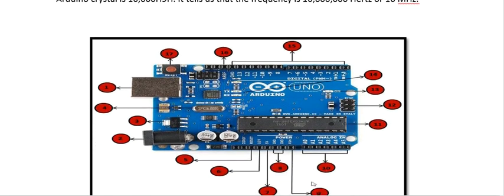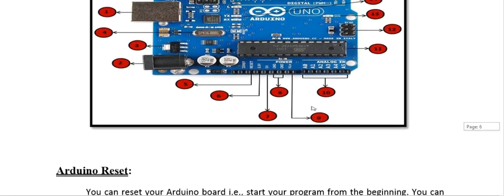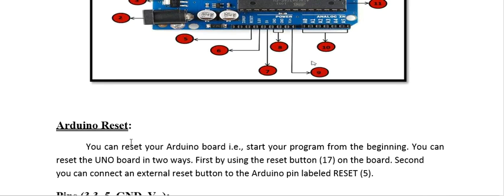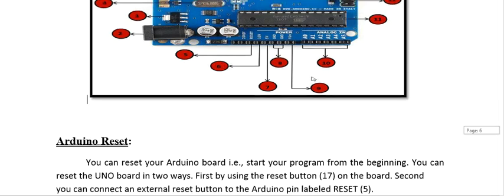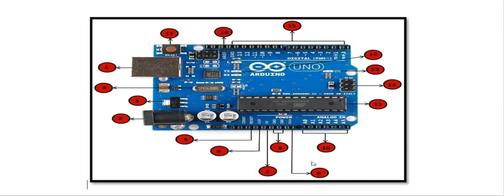Fifth: Reset Button. You can reset your Arduino board — that is, start your program from the beginning — in two ways: first, by using the reset button (number 17) on the board; second, by connecting an external reset button to the Arduino pin labeled RESET (pin 5).